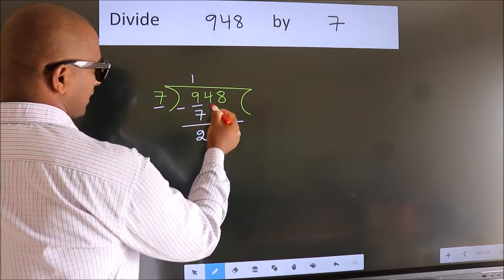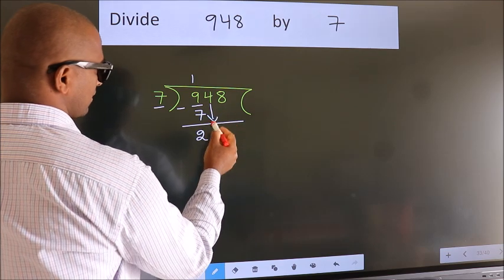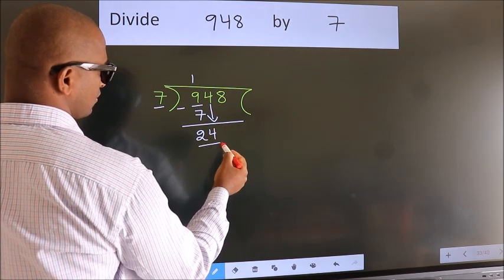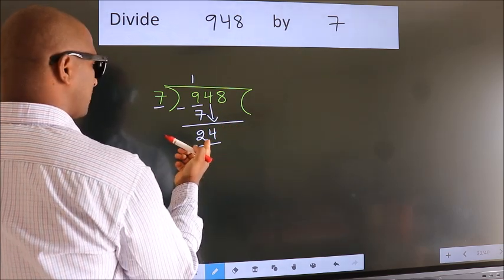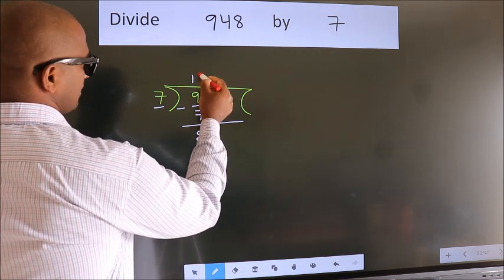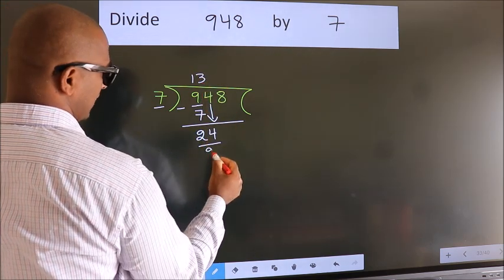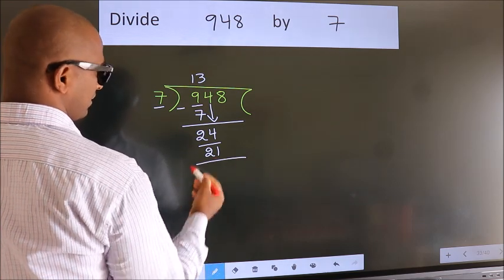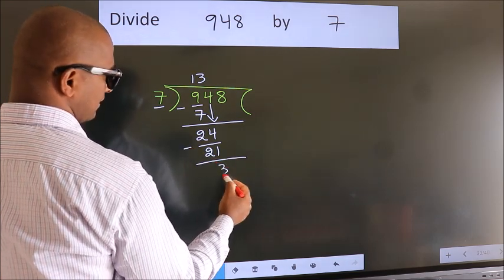After this, bring down the beside number. So, 4 down. So, 24. A number close to 24 in 7 table is 7 threes, 21. Now, we subtract. We get 3.